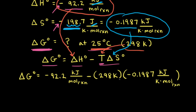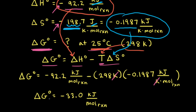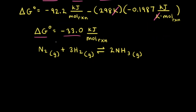With everything plugged into the equation, notice that Kelvin cancels out, giving us kilojoules per mole of reaction as our units. When we do the math, we find that ΔG⁰ is equal to negative 33.0 kilojoules per mole of reaction. Because ΔG⁰ is negative, the reaction is thermodynamically favorable in the forward direction.